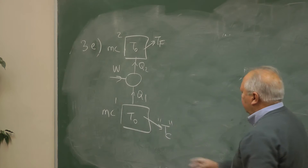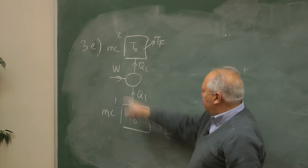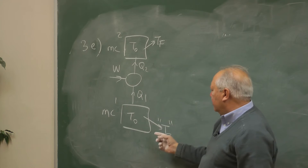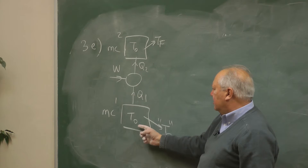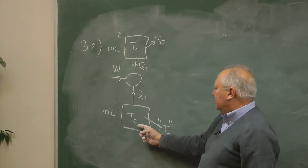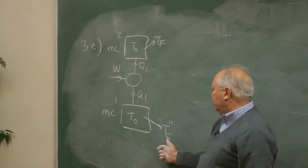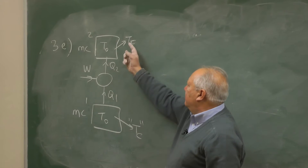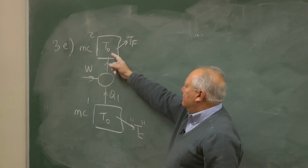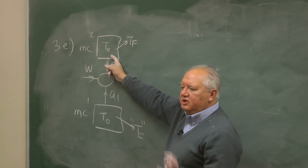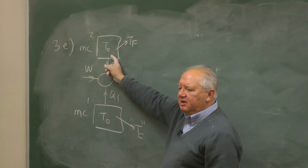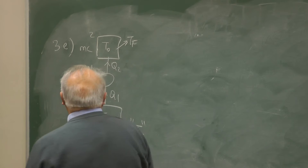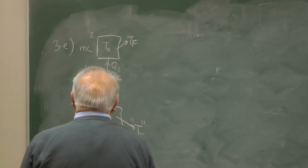So if originally they are at T0, the question is: what is the minimum work to reduce the temperature of this block to the cold temperature Tc, and what is the final temperature of the other block to which we dump heat? Of course it will increase, but the question is what will be the final temperature?